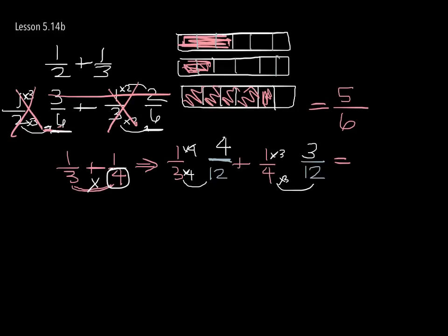Now we've translated, so we are able to get rid of the original fractions. I want you to get used to crossing them off so you don't accidentally add them up — that's one of those careless mistakes we make. Now that we have the same language, the language of 12s, I can just transfer that over. When I add fractions, I don't change the denominator. Now I can just add my numerators: four plus three is seven. So one-third plus one-fourth is seven-twelfths.